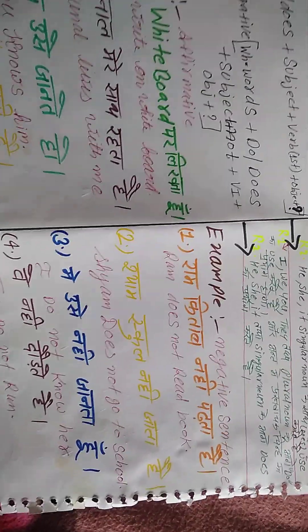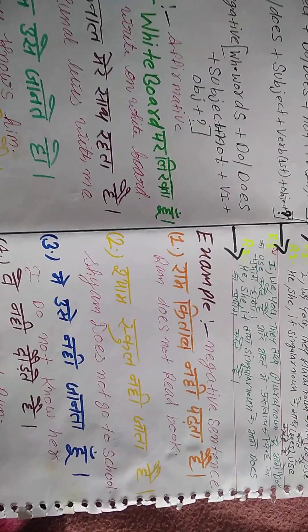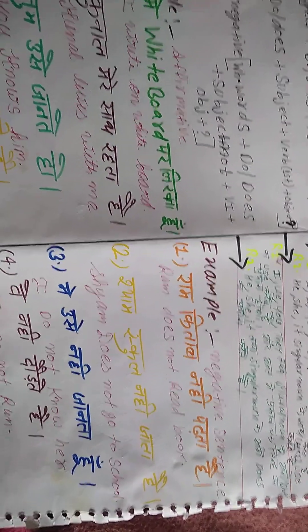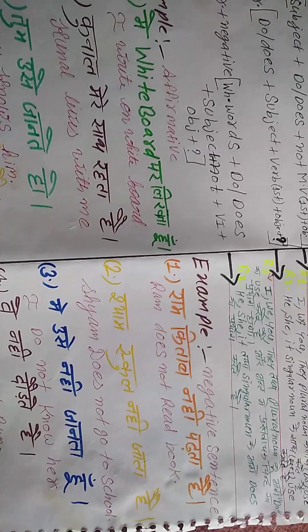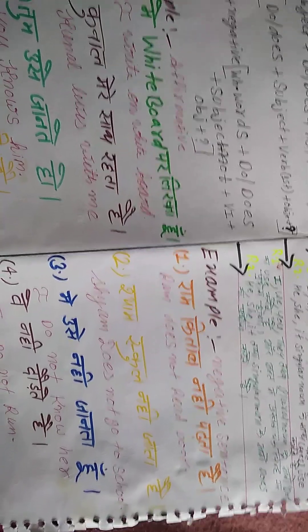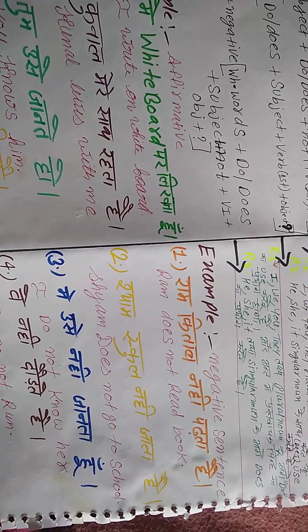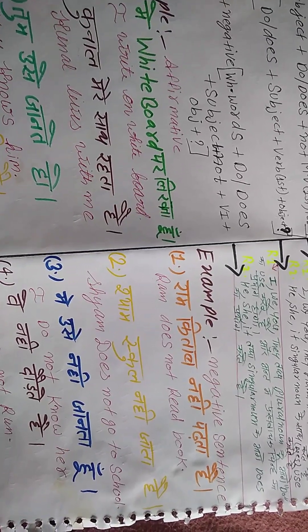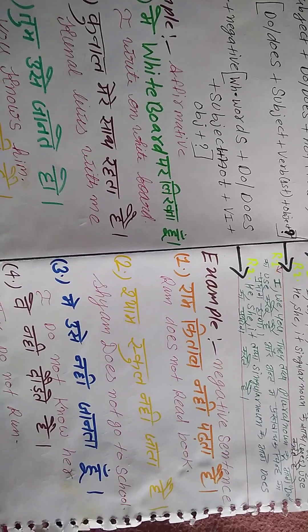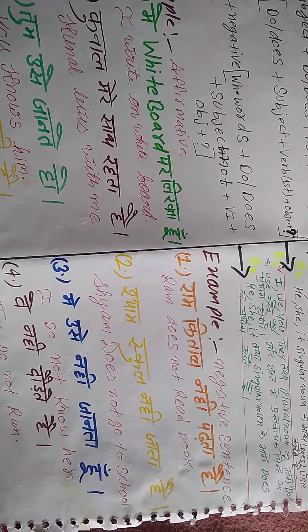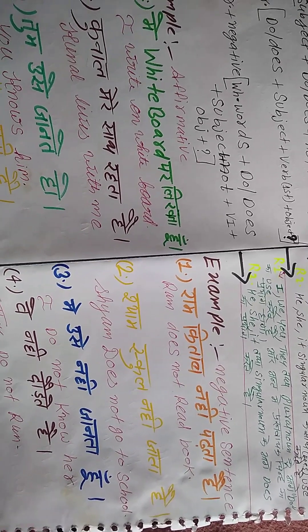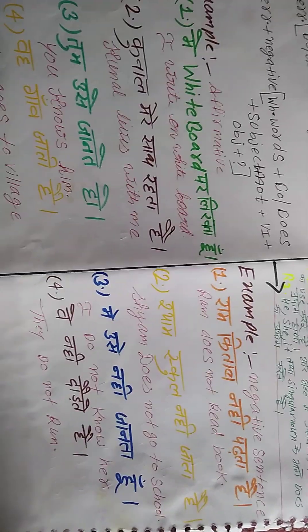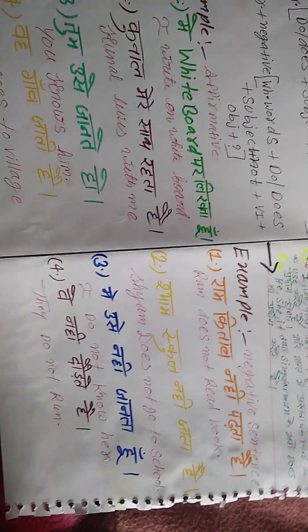Example देखेंगे. सभी बच्चे negative sentences के: राम किताब नहीं पढ़ता है — Ram does not read book. शाम स्कूल नहीं जाता है — Sham does not go to school. मैं उसे नहीं जानता हूँ — I do not know her. वे नहीं दौड़ते हैं — They do not run.